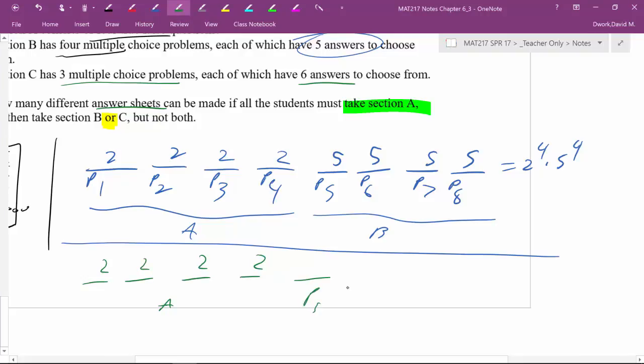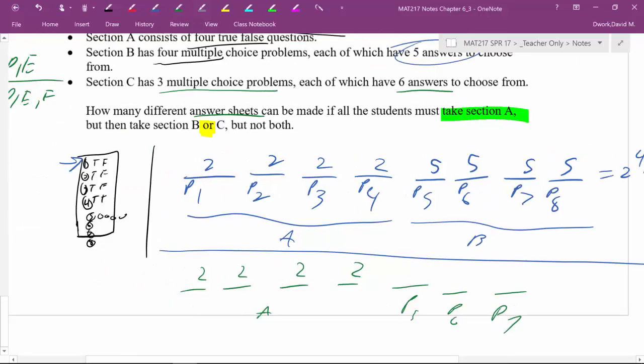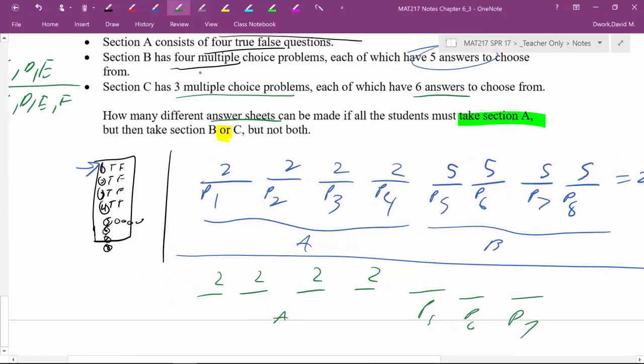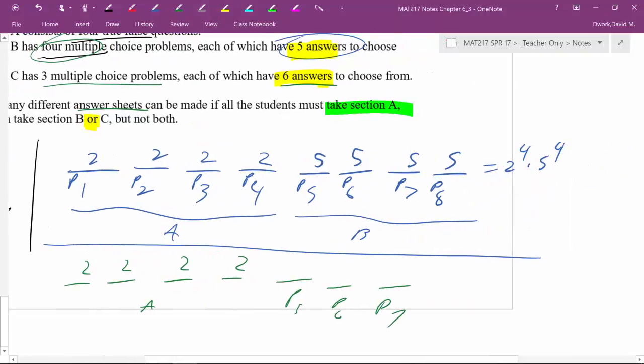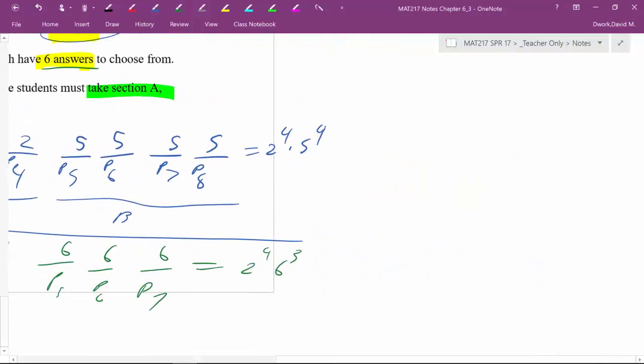But for them, for problem five, problem six, and problem seven, they don't have the same four choices. Now they have, or sorry, they don't have five answers, five choices. They have six. Okay. So therefore, what we're going to do here is fill in six, six, and six. So therefore, this would be what? Two times two times two times two, so that's two to the fourth, six to the third.